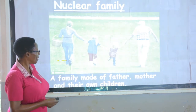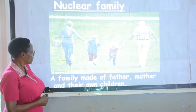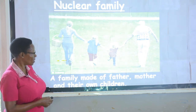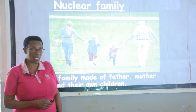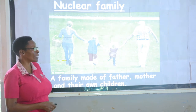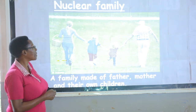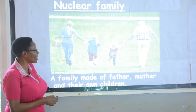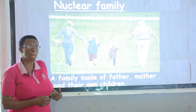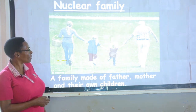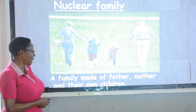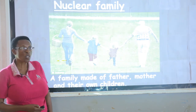Now look at the nuclear family. Very happy children. This is the father, this is the mother. What about this one? Brother. And that one? Sister. A nuclear family is a family made of father, mother, and their own children — their biological children. So that is a nuclear family. A nuclear family is a family made up of father, mother, and their own children.